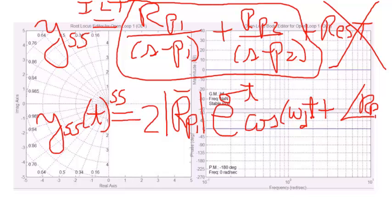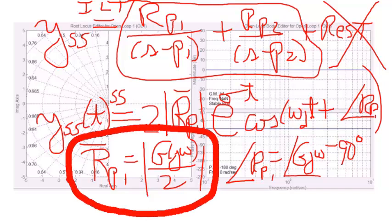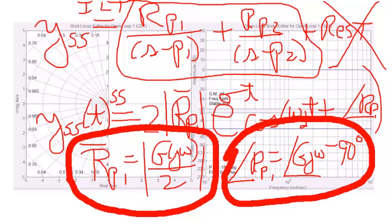Now, in our case, our magnitude was equal to g of j omega over 2, and our angle was equal to the angle of g of j omega minus 90 degrees. So when I substitute that into y steady state,